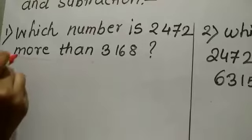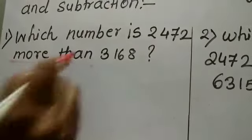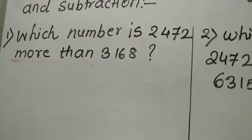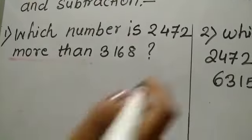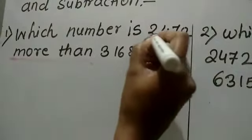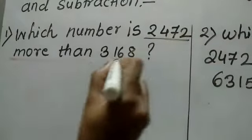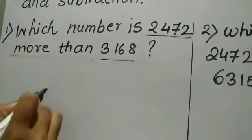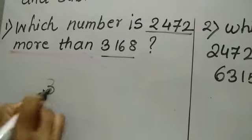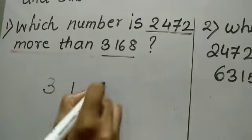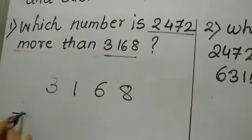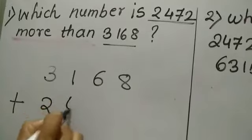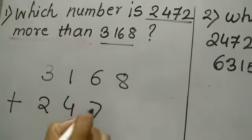So whenever you see the word 'more than,' you always add the given two numbers. So here I am going to add the number 2472 to the number 3168. So first I write 3168 and then I am going to add the number 2472.